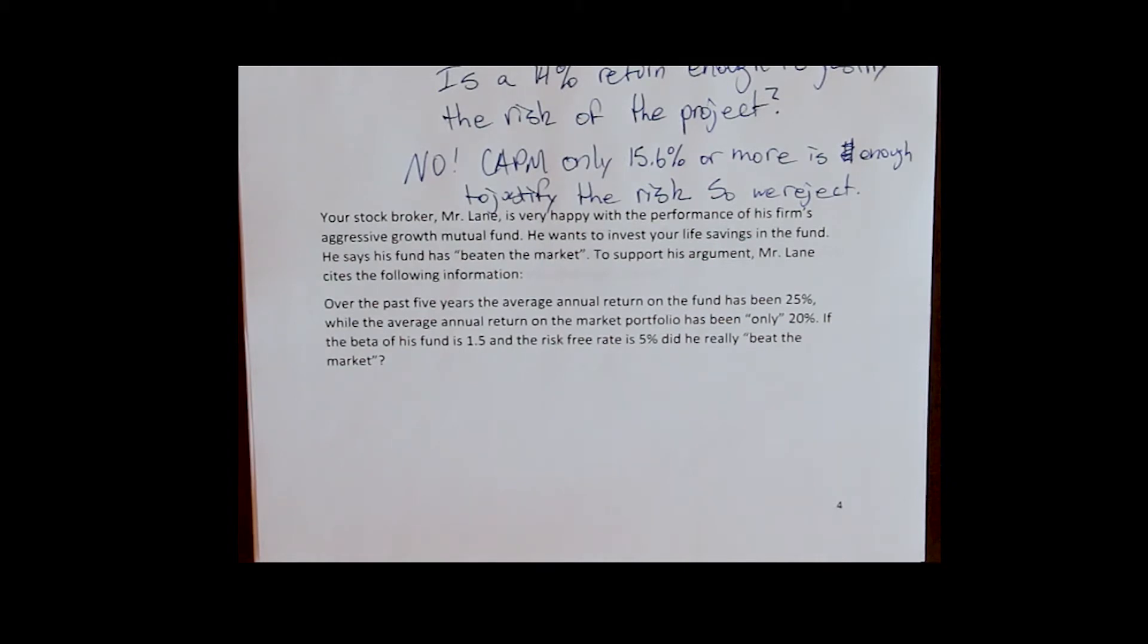To support his argument, Mr. Lane cites the following information. Over the past five years, the average annual return on the fund has been 25%, while the average annual return on the market portfolio has been only 20%. If the beta of his fund is 1.5 and the risk-free rate is 5%, did he really beat the market?